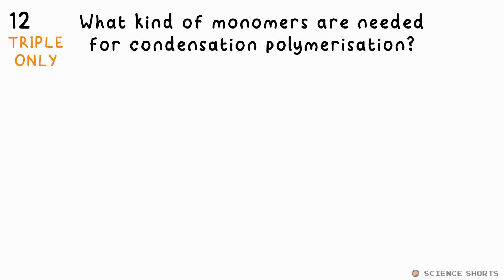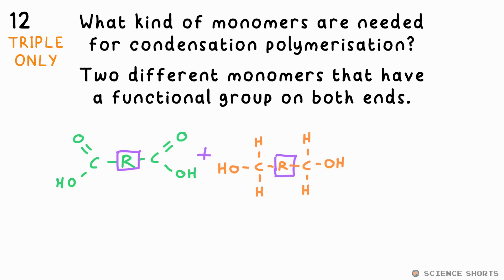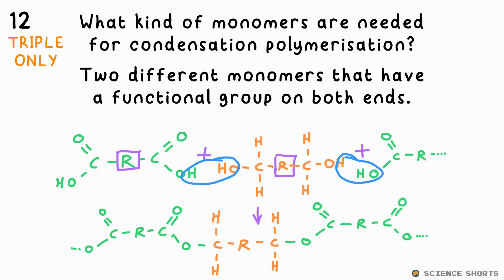Question 12. What kind of monomers are needed for condensation polymerisation? You need two different types of monomers that have functional groups on both sides of the molecule — for example, an alcohol with two OH groups and a carboxylic acid with two COOH groups. The ester-forming reaction happens on both ends of these molecules to make a polymer, a polyester in this case. Again, water is kicked out, hence condensation polymerisation.